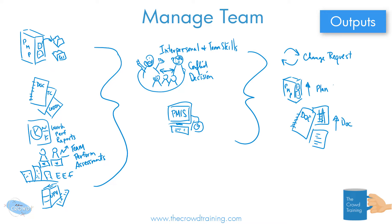The environment you work in could also have its updates or influences or changes, so you're going to have enterprise environmental factor updates. So updates, updates, updates, and change requests for your outputs. To summarize: your interpersonal and team skills are really how you go about managing — the leadership that you and others use, and a system to help you. Your inputs are the project management plan, project documents, work performance reports, team performance assessments, enterprise environmental factors, and organizational process assets.